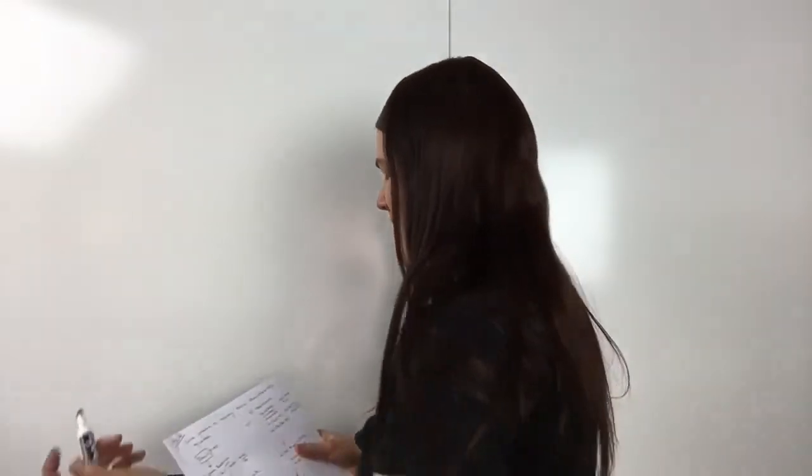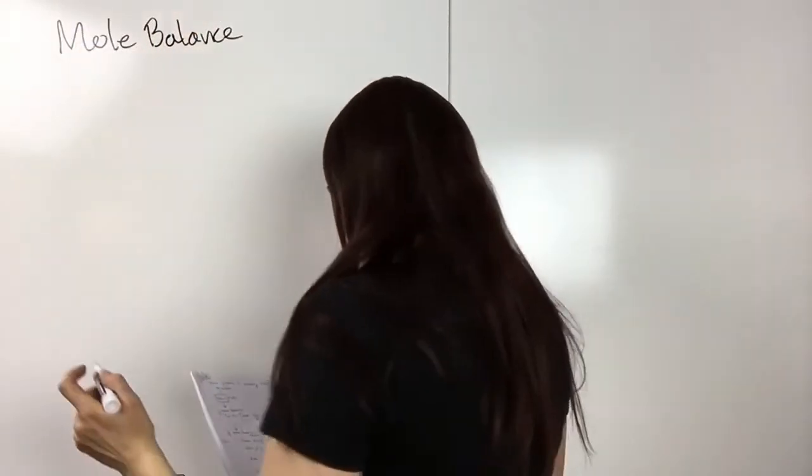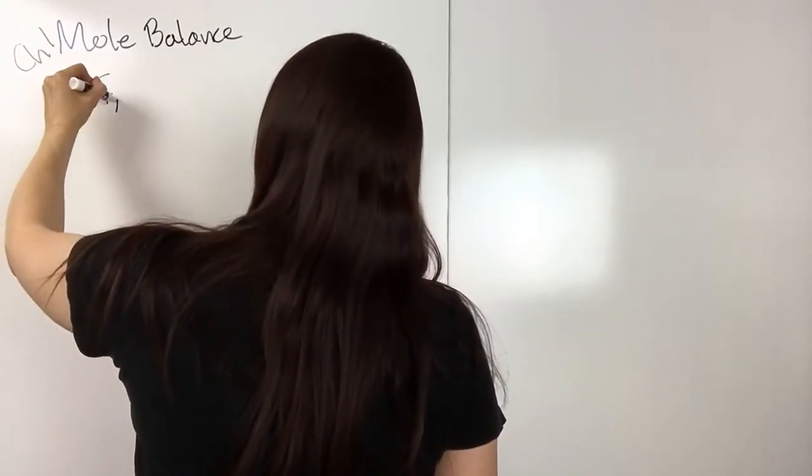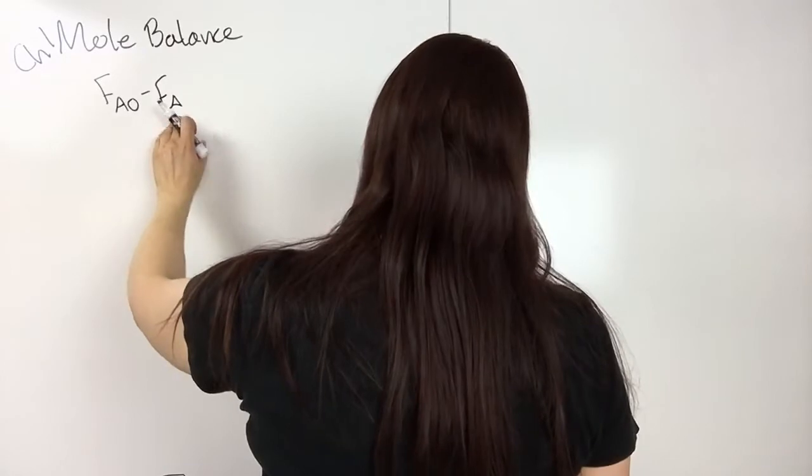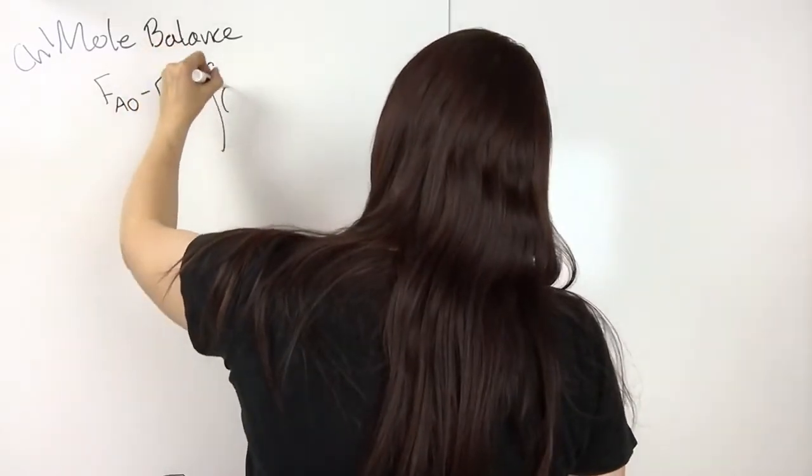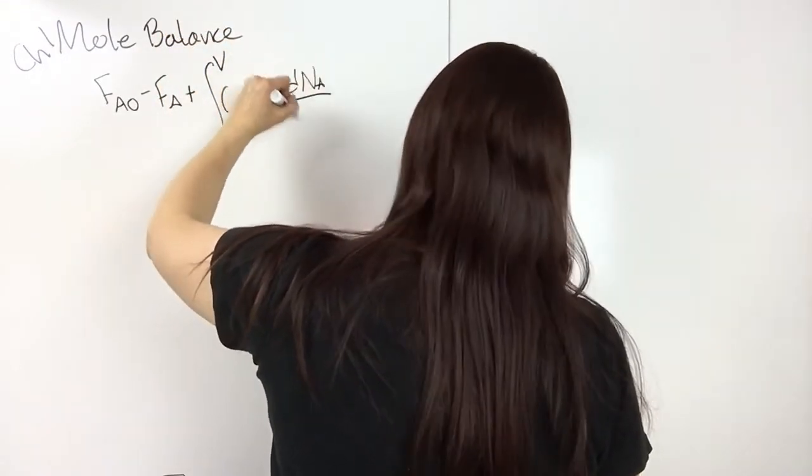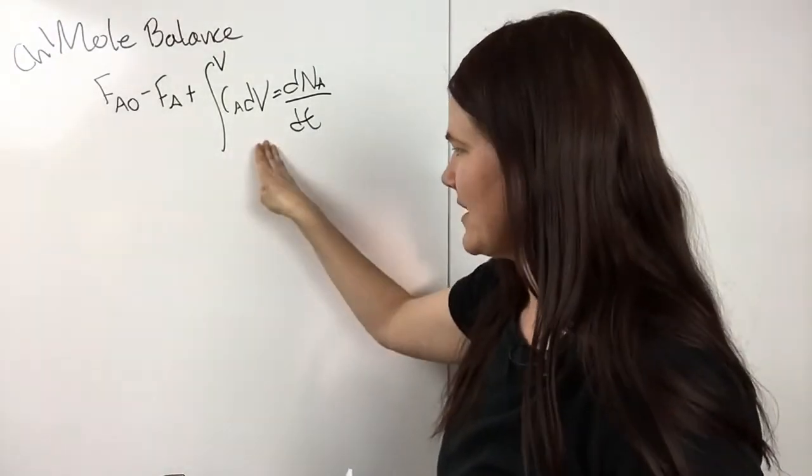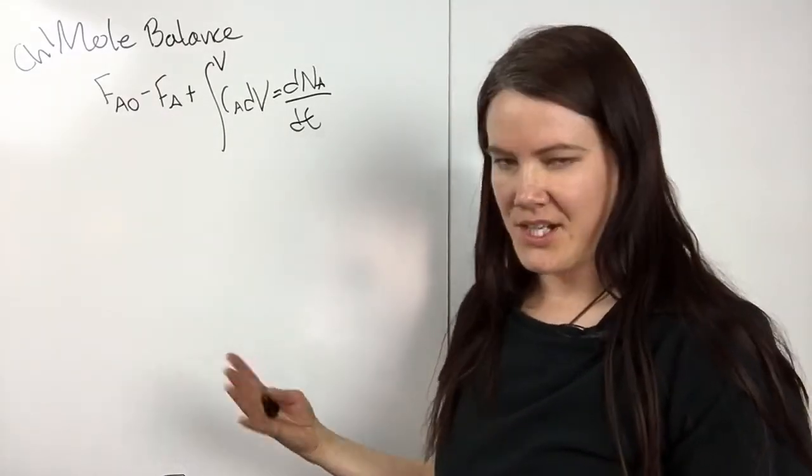And then you always start these the same way. So, first of all, you would start with a mole balance. And that was chapter one. And this would be this. Whatever's flowing in minus whatever's flowing out plus whatever's being generated equals what's accumulating. So if you remember the mole balances, you wouldn't actually use this. You wouldn't start with this equation. You would start with the equation for the type of reactor you have. So if you have a batch or whatever.